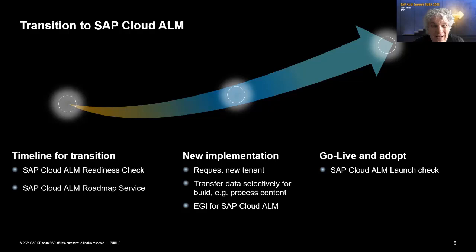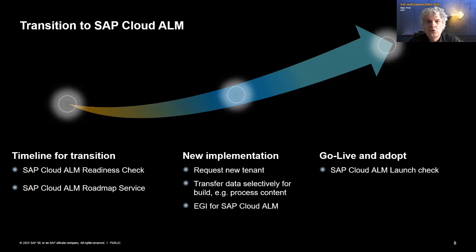As a Greenfield customer new to ALM, you request your private tenant via the OneSupport launchpad, wait less than 15 minutes for provisioning to finalize, connect your landscape, configure the use cases, and then you're already productive — a very fast time to market. For Brownfield customers already using Solution Manager, the same procedure applies. There is no conversion planned for the transition from Solution Manager to Cloud ALM; you request a new tenant. We will provide selective data transfer for use cases where it really matters — areas where you invested heavily in master data, such as process content or test content.